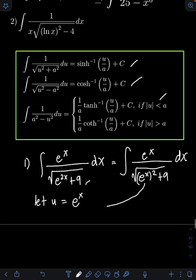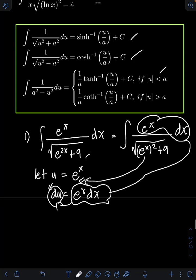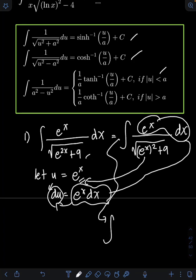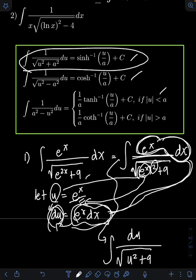So if we let u be equal to e^x, getting the derivative of both sides: du equals the derivative of e^x, which is e^x dx. We will have this term e^x dx on the original integral, which is now equal to du. If we substitute, we will have the integral of du over the square root of u squared plus 9.